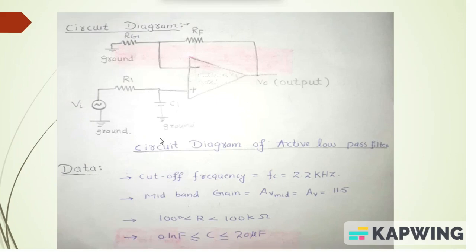The data given in the problem statement is: cutoff frequency fc = 2.2 kilohertz, mid-band gain Av = 11.5, and the resistor and capacitor values must satisfy the conditions given in the question.